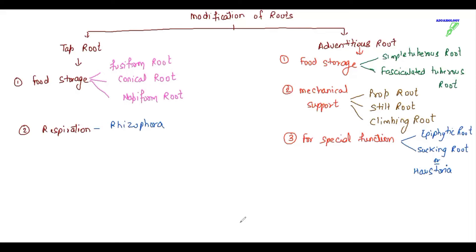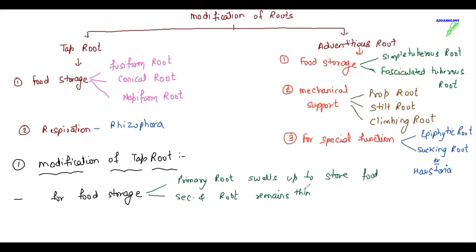Let us study the modifications of these roots. So first of all we will talk about modification of tap root. It is for food storage. So when I say here, the primary root is going to swell up so as to store food. Secondary and tertiary roots will remain thin and small. In modification, hypocotyl also joins the tap root. Stem is reduced and disc-shaped in the beginning.